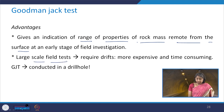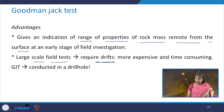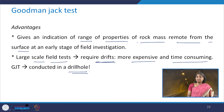Large-scale field tests require drifts to be properly constructed and therefore are more expensive and time consuming. The Goodman Jack test is adopted because it is conducted in a drill hole. Compared to making a drift or an adit or a test chamber, it is much cheaper to use a drill hole, so the cost associated with the Goodman Jack test reduces drastically.